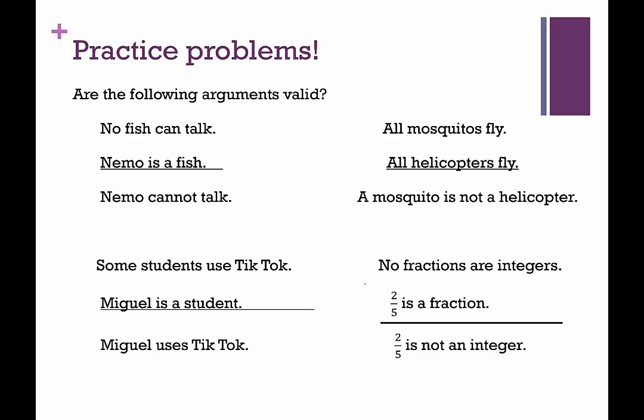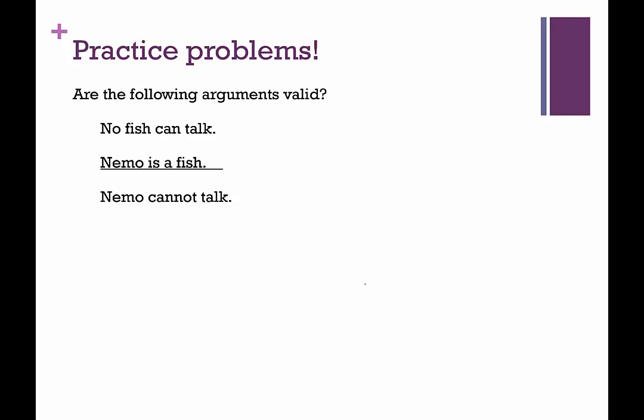Okay, so each of these has two premises and one conclusion. Let's go through them one by one. The first one says, no fish can talk. Nemo is a fish, those are our two premises. No fish can talk is premise one. Nemo is a fish is premise two. Our conclusion, therefore, Nemo cannot talk.